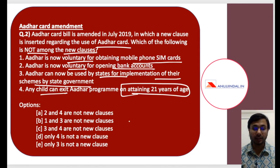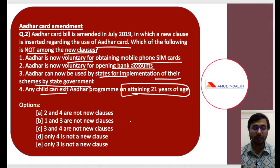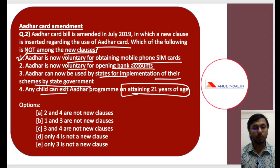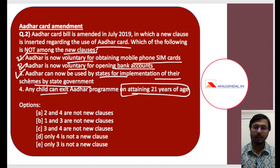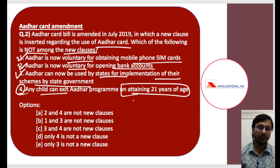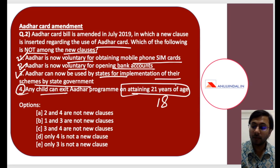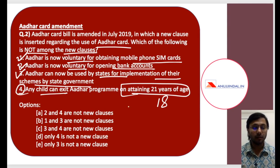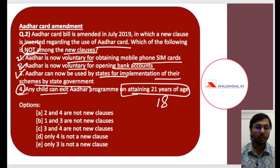If you know the answer, provide it in the comment section below — think about it and see whether you are prepared. Clause 1 is correct: Aadhar is now voluntary for mobile phone SIM cards. Clause 2 is also correct: you do not need to give Aadhar for opening a bank account; other documents can be used. Clause 3 is correct: it can be used by states for implementing various state schemes. Clause 4 is incorrect: any child can exit the Aadhar program on attaining 18 years of age, not 21. The correct answer is D — only 4 is not a new clause.